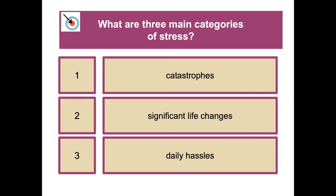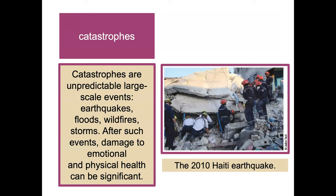What are the three main categories of stress? We've got catastrophes, significant life changes, and daily hassles. Catastrophes are unpredictable, large-scale events like earthquakes, floods, wildfires, storms, and worldwide pandemics.